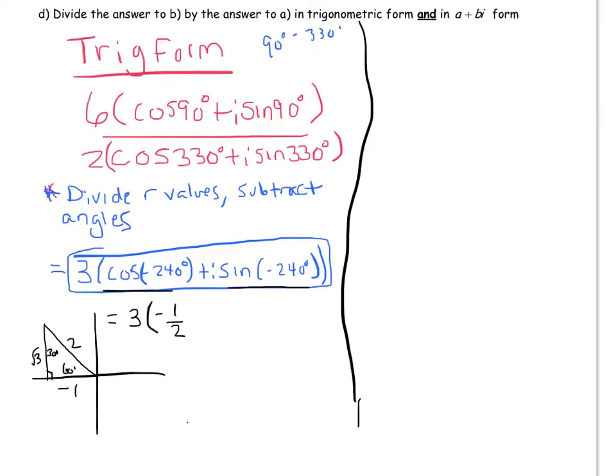And so now I know that this can be written as 3 cosine of negative 240 is negative 1 half plus I sine of negative 240 is root 3 over 2.